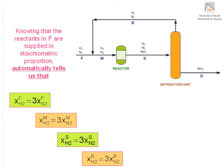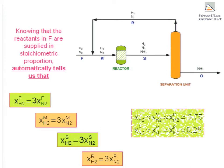Furthermore, in streams containing only nitrogen and hydrogen, streams F, M and R, the molar fractions of their components are known: 0.75 hydrogen and 0.25 nitrogen.